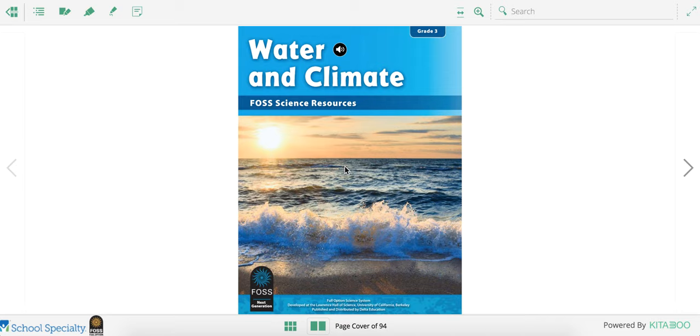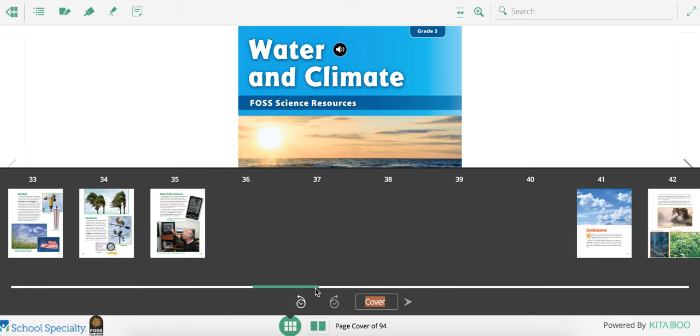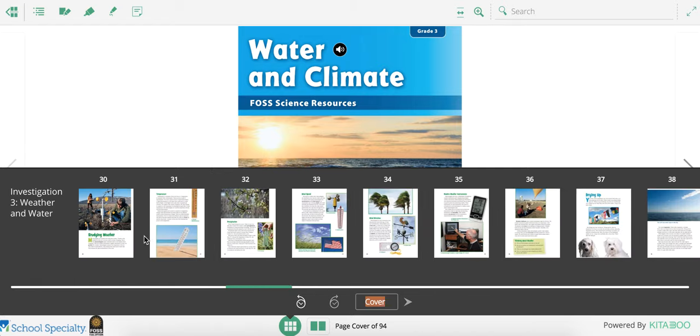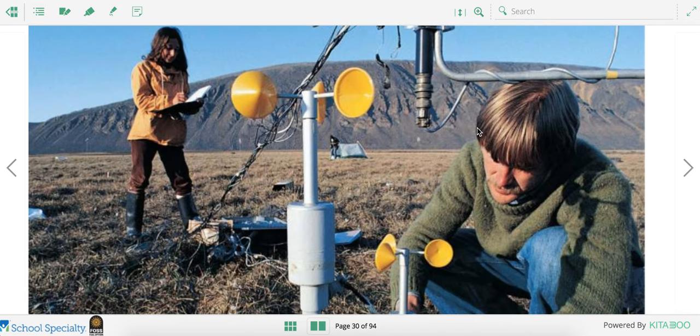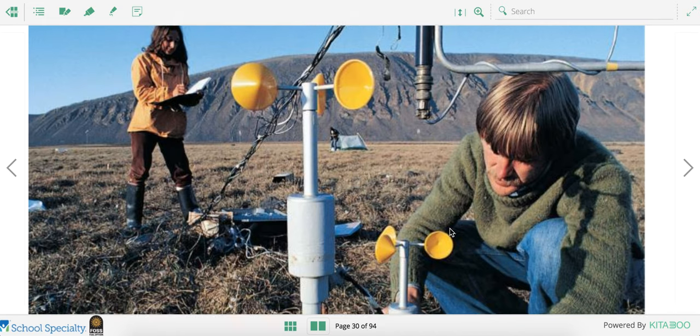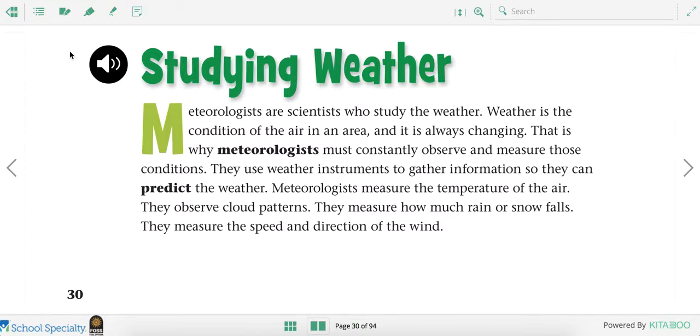Today during science we're going to continue reading our water and climate FOSS science textbook. I'm going to use the page finder and turn to page 30. On page 30 we're going to learn about how people study the weather. People who study the weather, like these two individuals, are called meteorologists. Sometimes when you watch TV during the news you see meteorologists telling you what the weather is going to be like for the day or for the week. Let's find out what their job is.